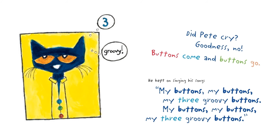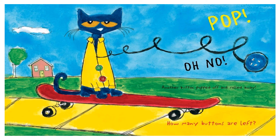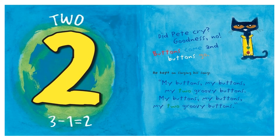My buttons, my buttons, my three groovy buttons. My buttons, my buttons, my three groovy buttons. Pop! Oh no! Another button popped off and rolled away. How many buttons are left? Two. He had three buttons and one went away and that equals two. Three minus one equals two.